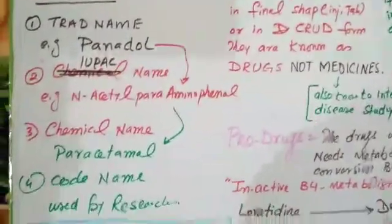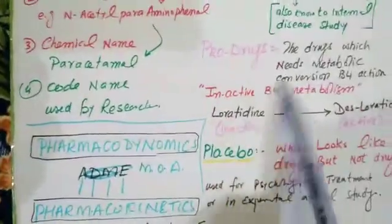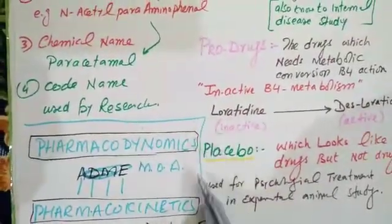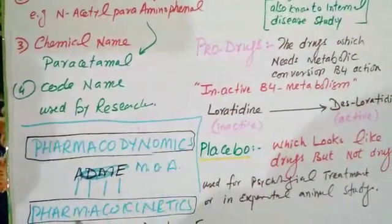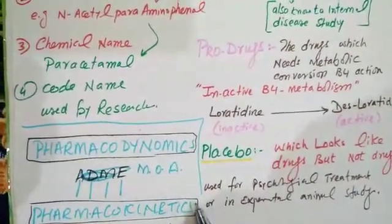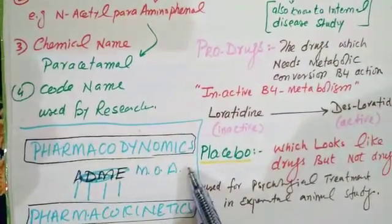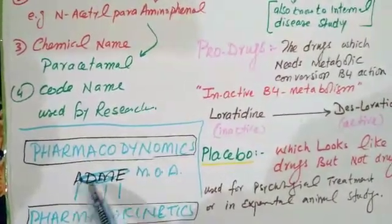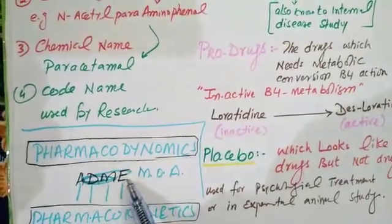Pharmacology actually has two basic branches: pharmacodynamics and pharmacokinetics. Pharmacodynamics is the study of the mechanism of action of drugs. Pharmacokinetics is the study of ADME — absorption, distribution, metabolism, and elimination.